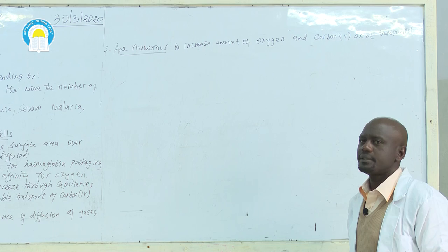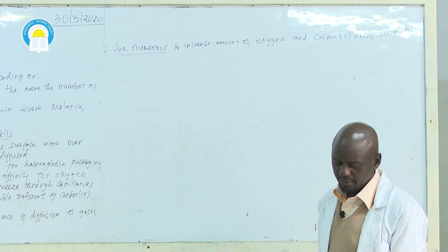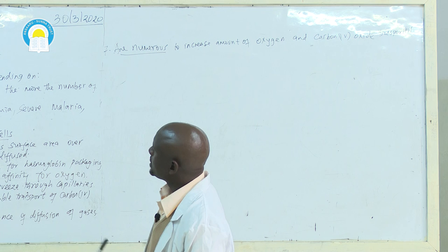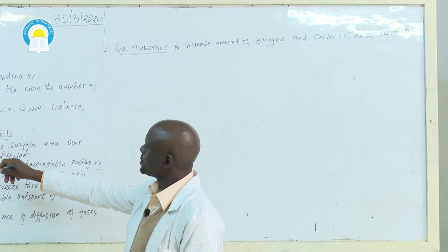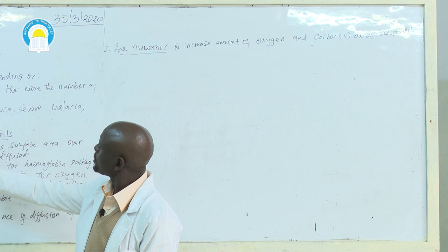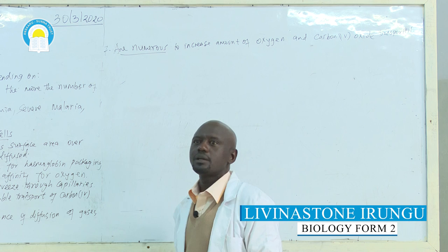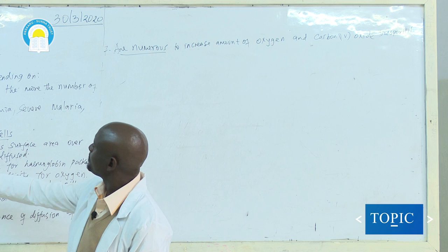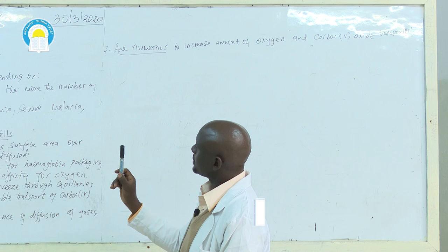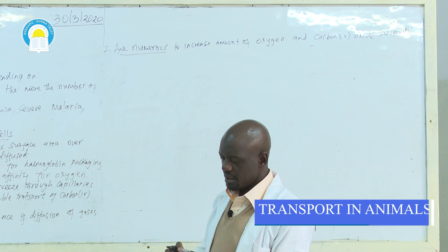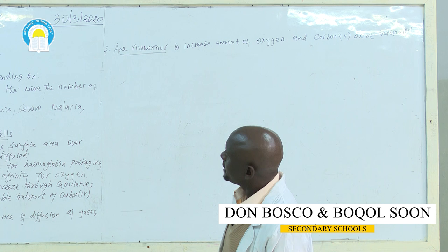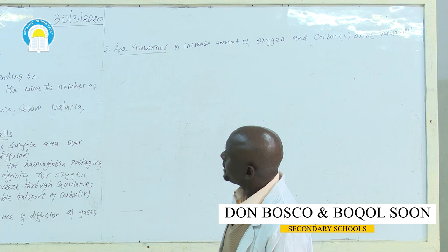Note: the seventh adaptation — being numerous — applies when a question asks about red blood cells in the plural. If a question refers to a single red blood cell, you should not include this adaptation, as it is a property of the population, not one individual cell. Those are the adaptations of red blood cells.